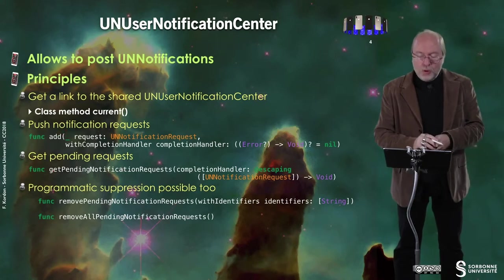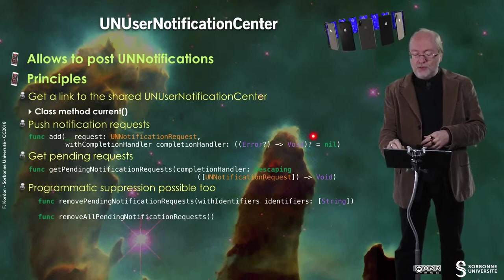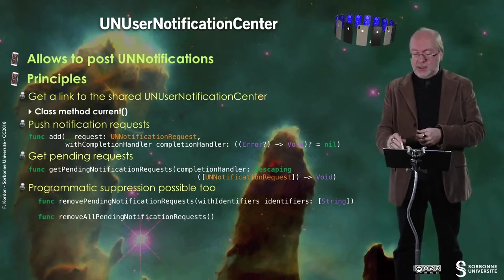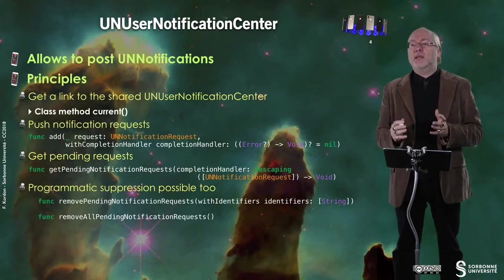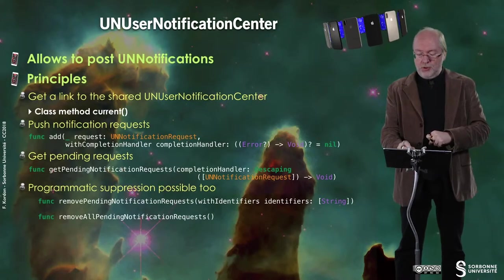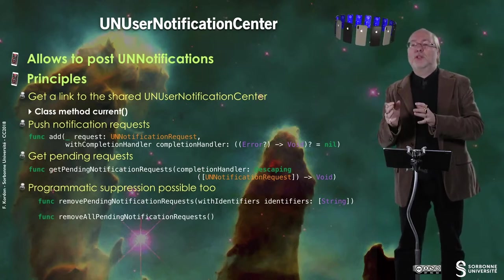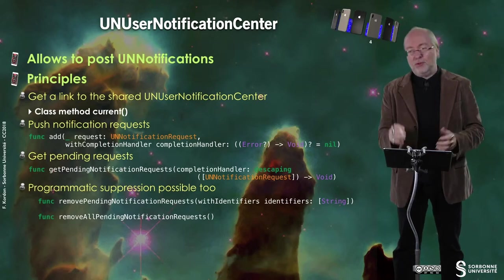Then you can push notification requests — you add a request. This is the description of your notification request and you get notified by a completion handler that is invoked once the notification has been added, telling you if there is a problem or not. You can retrieve information about whether the notification has been posted. You can also get pending requests thanks to a method, and when you have completed the request you are invoked in a method that gives you an array of UN notification requests that are pending for you.